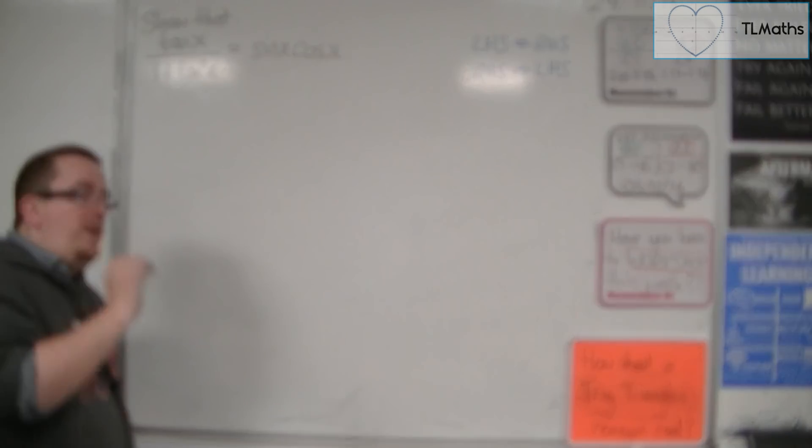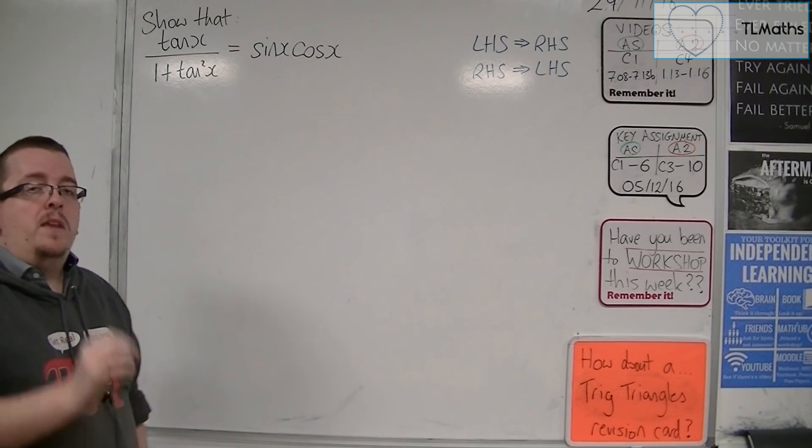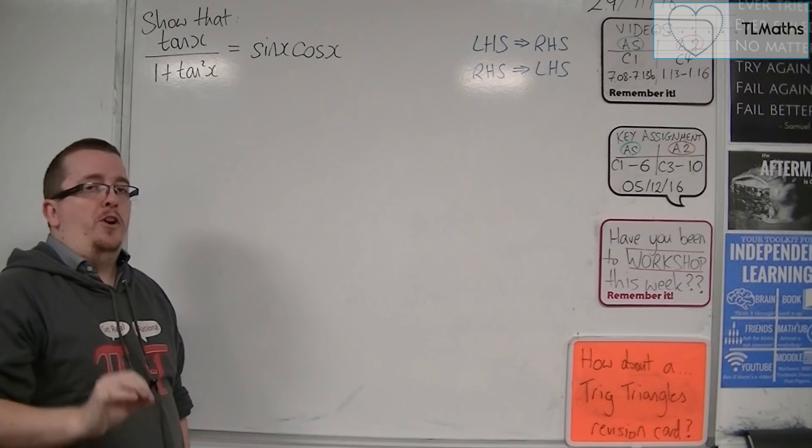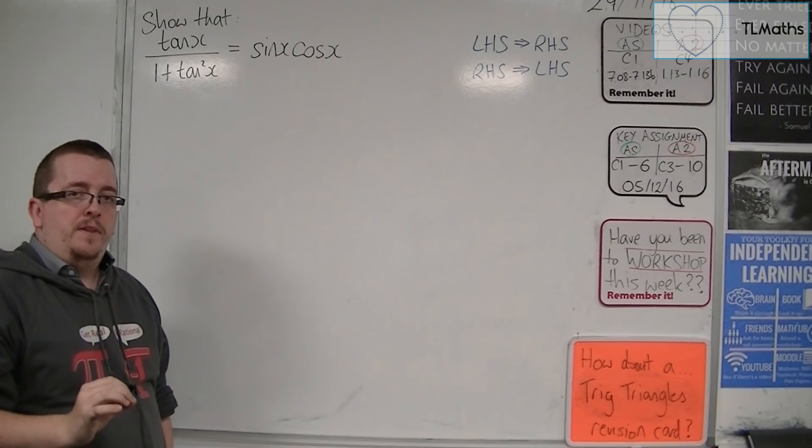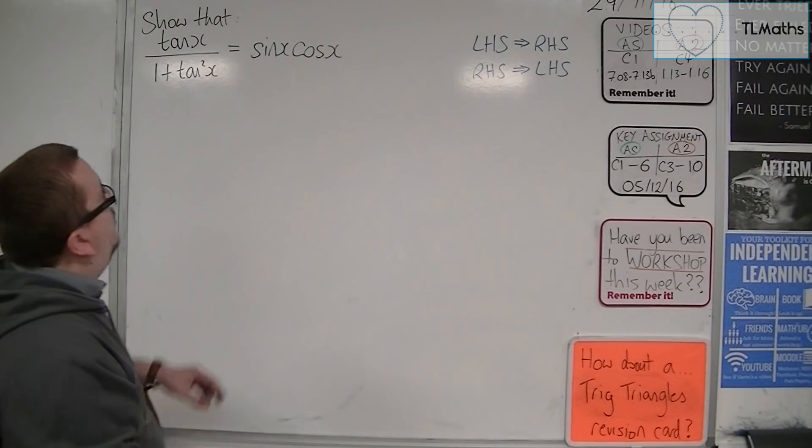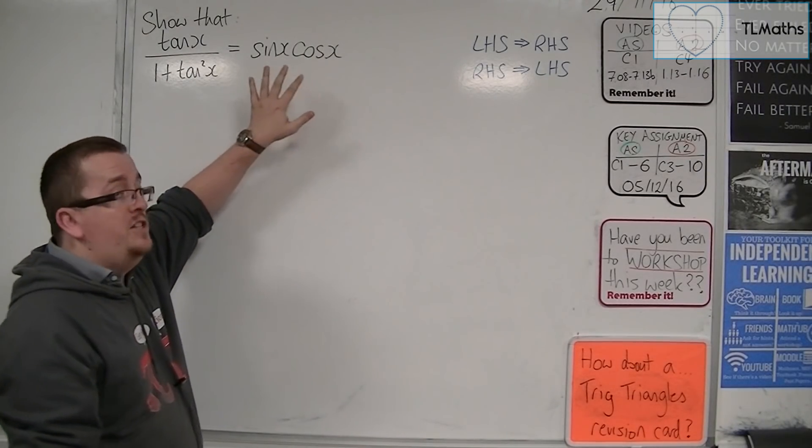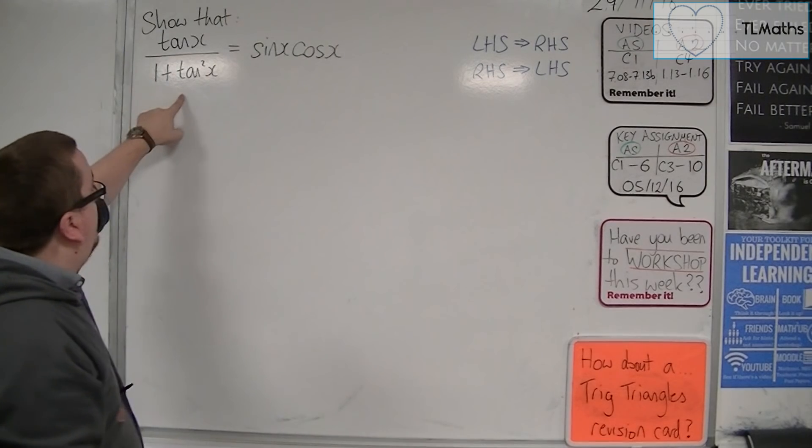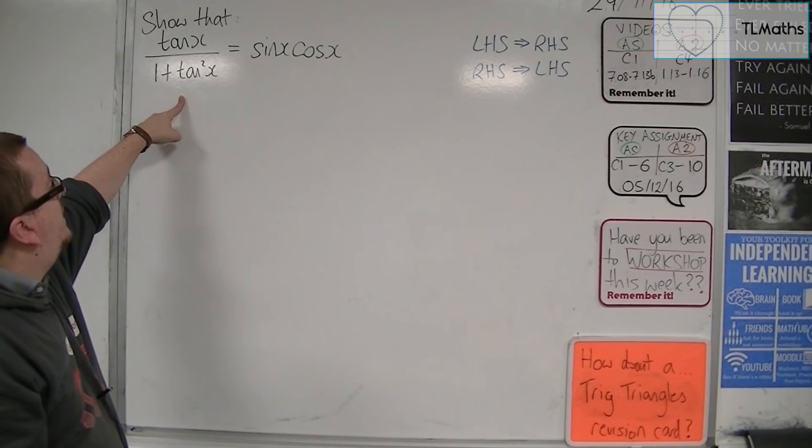Now, the suggestion over which side to start with, start with the most complicated looking side. That's the general rule of thumb here. So, I wouldn't start with sin x cos x. There's not much I can do with that. But there is stuff I could do with tan x over 1 plus tan squared.